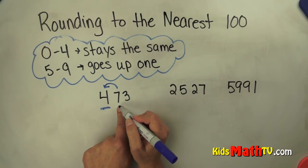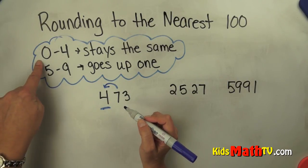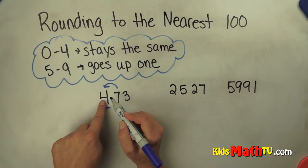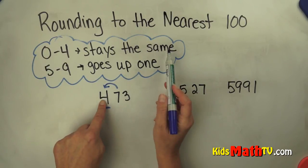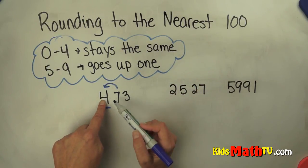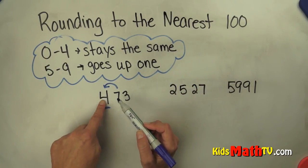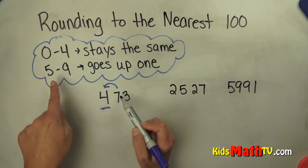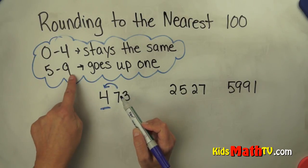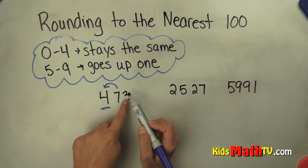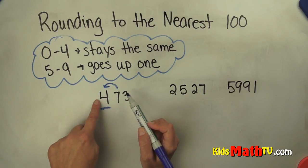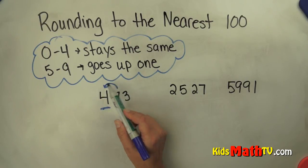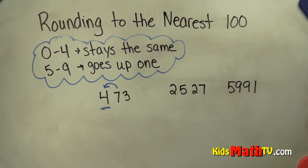If the number to the right is zero to four, the number in the hundreds will stay the same. If the number to the right is between five and nine, it tells that number to go up. I like to say that it's bossy and it tells it to go up.